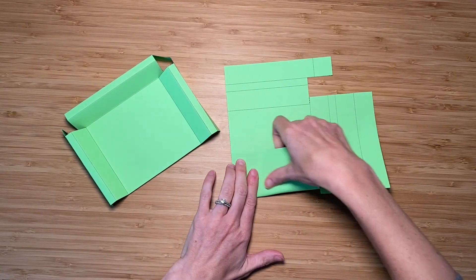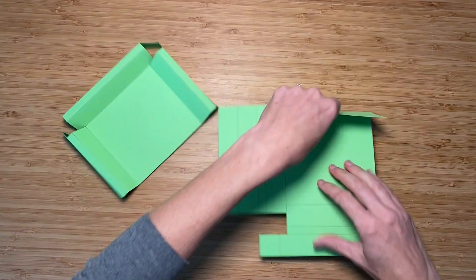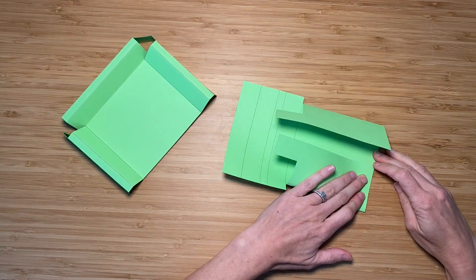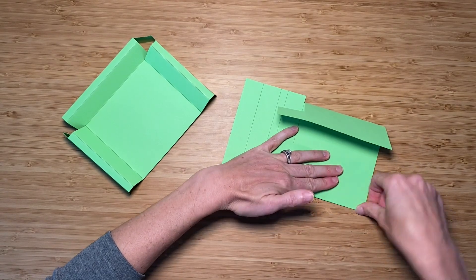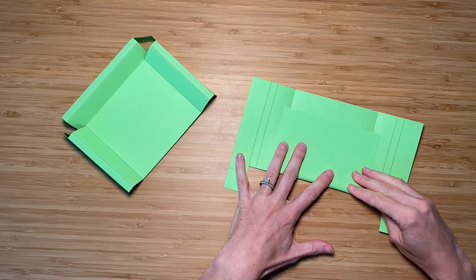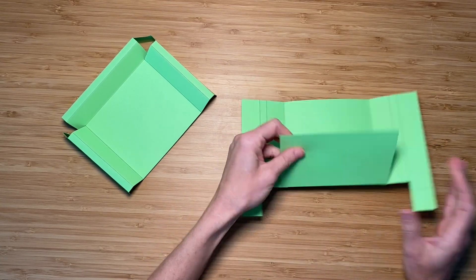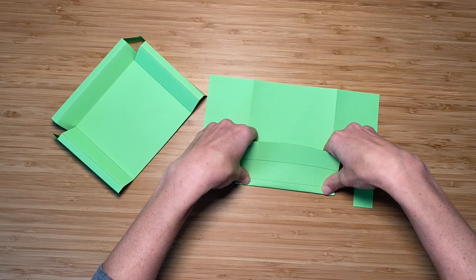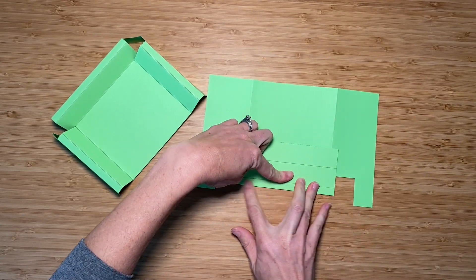Start by folding in on the gray dotted lines closest to the center rectangle. If you line up the edges it'll help you fold in a straight line. This piece right here you'll fold right where the slits are that you cut. Then turn the piece over and fold on each of the gray dotted lines. You're folding backwards this time.